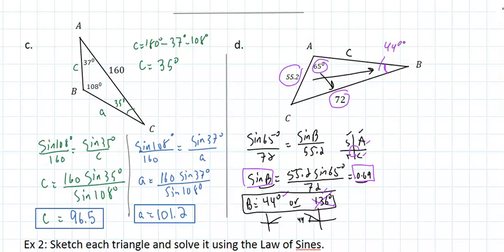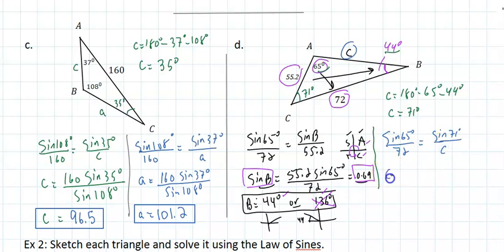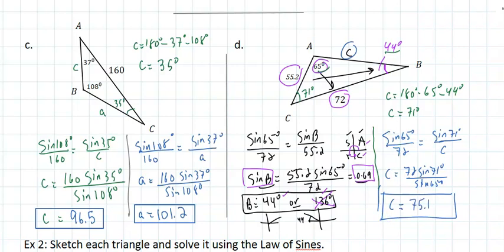Now that I know B is 44 degrees and the given angle is 65 degrees, angle C is 180 minus 65 minus 44, which is 71 degrees. Using the original given information to avoid rounding errors, C equals 72 times the sine of 71 degrees divided by the sine of 65 degrees, which gives C equal to 75.1. Every time the sine of beta equals a number between 0 and 1, you get those two possible cases, so be careful to choose the correct one.